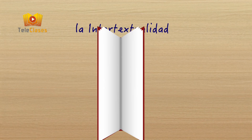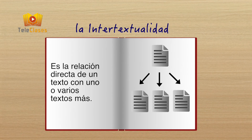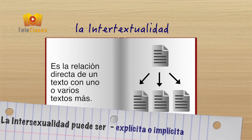Cuando estéis analizando un texto, puede ocurrir que os percatéis de que posee relación con otros textos que conocéis. Esto está directamente relacionado con el concepto llamado intertextualidad. En términos generales, la intertextualidad se define como la relación directa de un texto con uno o varios textos más. Es la incorporación de referencias claras que remiten a un texto anterior y distinto del que se lee. Puede darse de dos maneras: explícita e implícita.